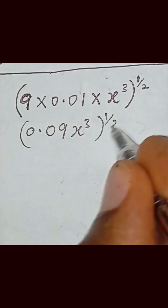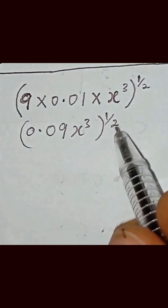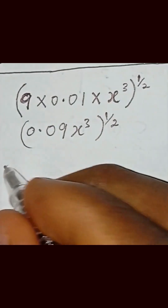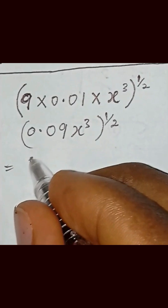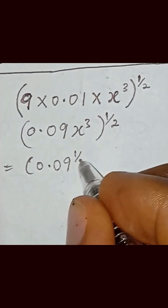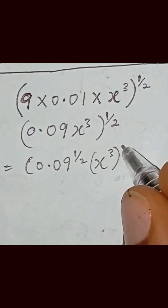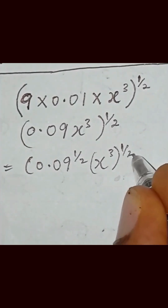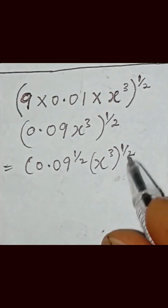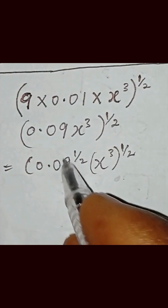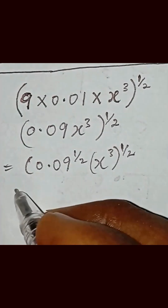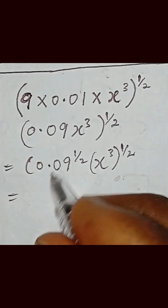Then x to the power 3 inside the bracket raised to the power half. So from here, we multiply the half with the expression in the bracket. That gives us bracket open 0.09 raised to the power half, times x inside bracket raised to the power 3, close the bracket raised to the power half. So now we can also reduce and simplify this.